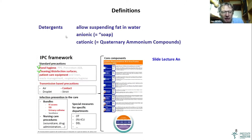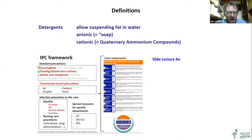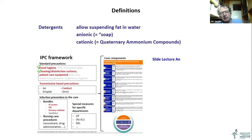Detergents are comprised in soaps and are products that allow suspending of fat in water. They can be anionic or cationic. Anionic detergents are what we call soap, but cationic detergents — as I will show later — are quaternary ammonium compound disinfectants. Antiseptics and disinfectants have a huge place in the IPC framework and are very important in standard precautions as well as in transmission-based precautions.